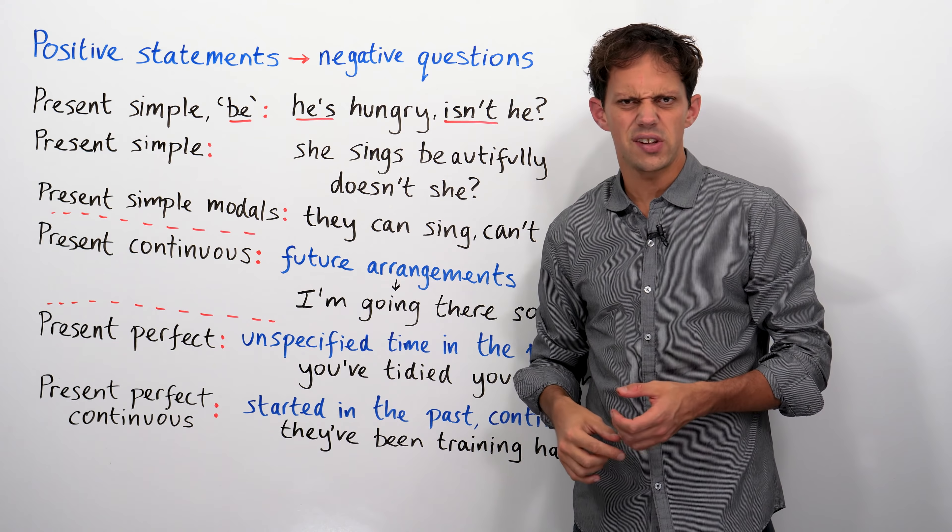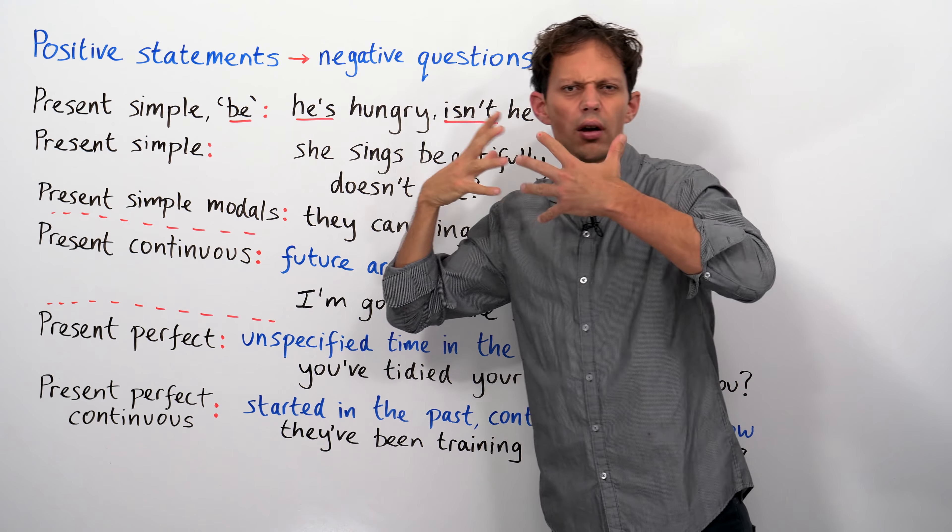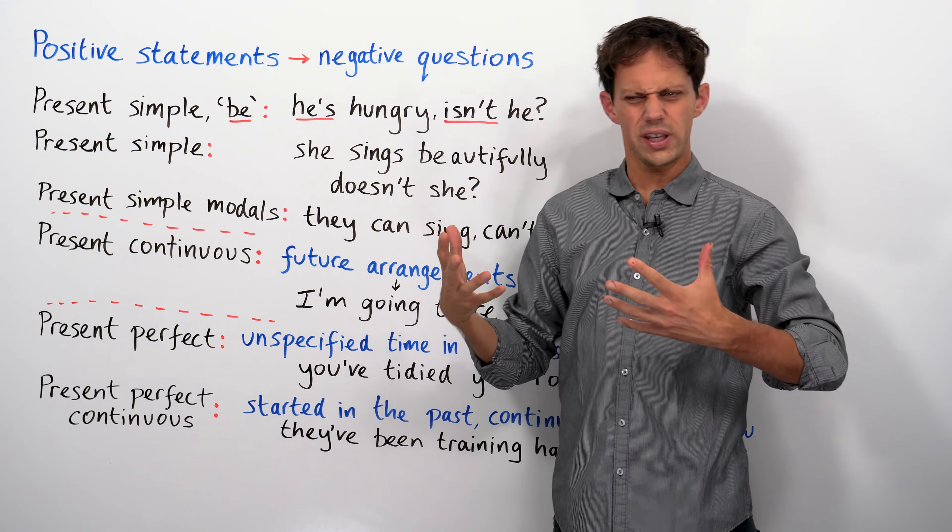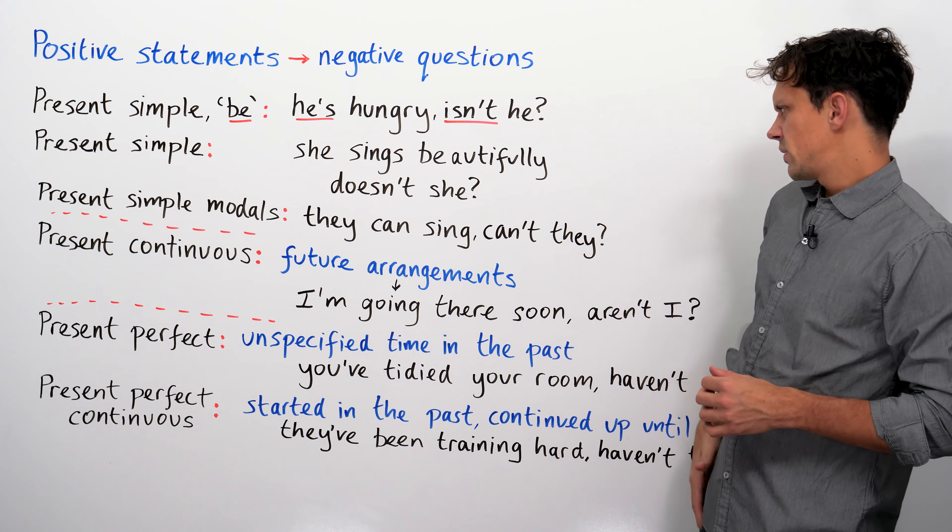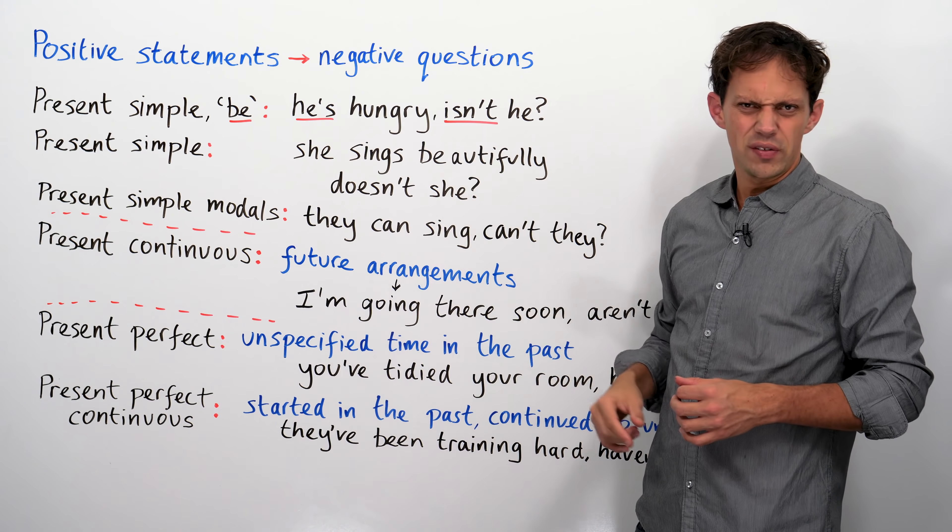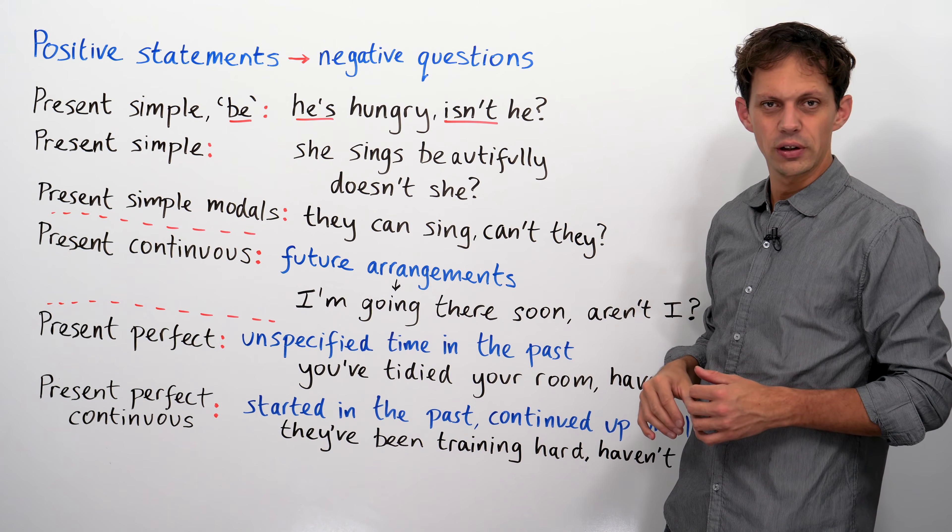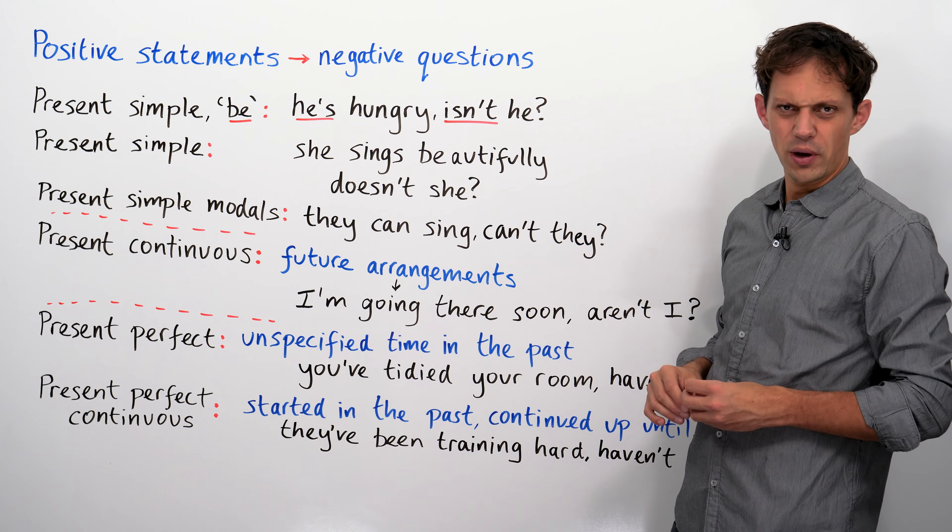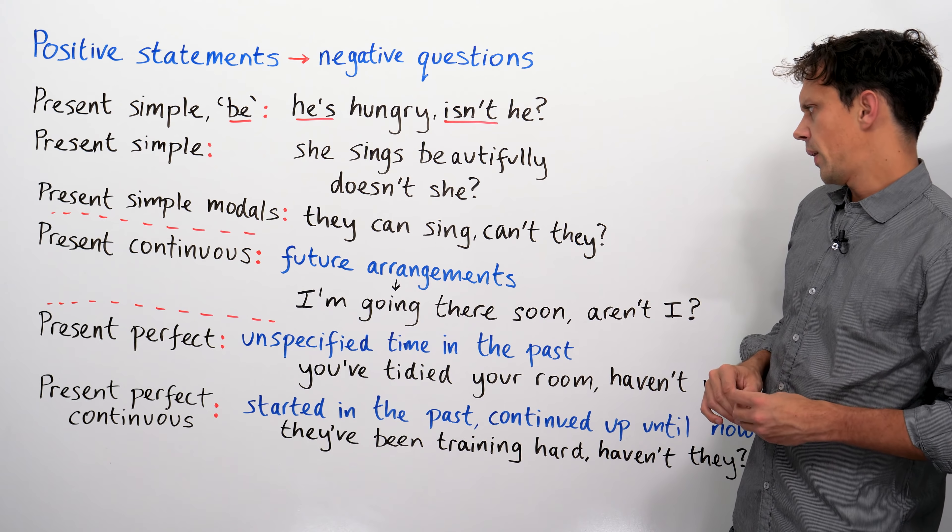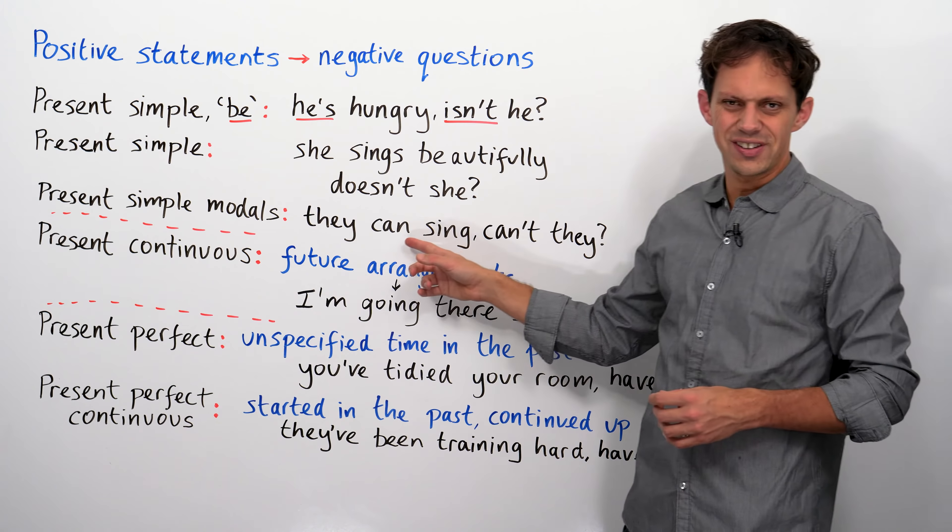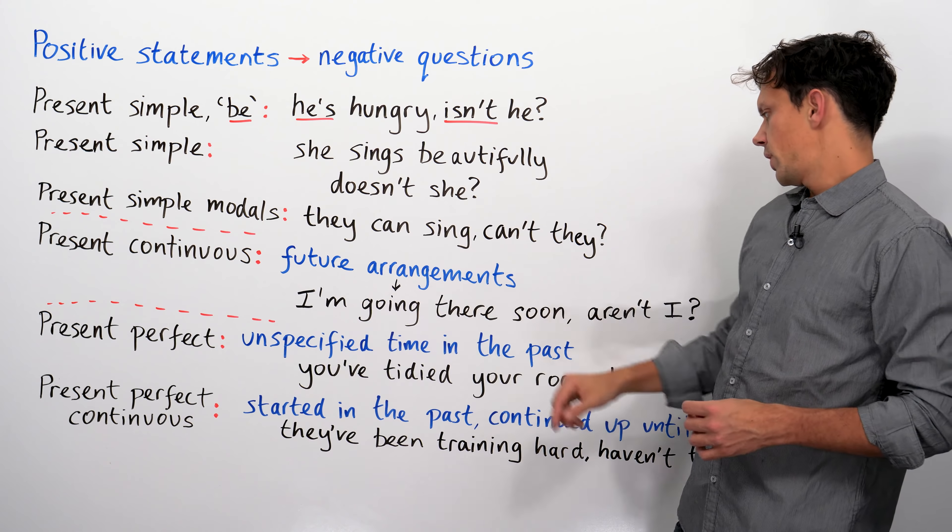He isn't hungry, is he? So, changing the meaning, it shows that I'm kind of surprised. What? He can't be hungry. How can he be hungry? She doesn't sing beautifully, does she? Yeah, it's quite disparaging, quite critical. You don't do that very well, do you? It's slightly insulting. They can't sing, can they? It's kind of poking fun at.